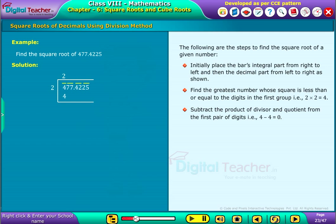Subtract the product of divisor and quotient from the first pair of digits. That is, 4 minus 4 which is equal to 0. Bring the digits of the second group beside the remainder 0 to get the new dividend as shown.